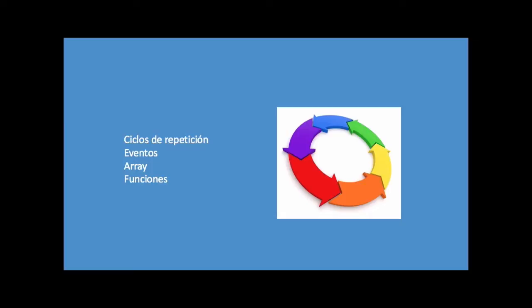Por ejemplo, si yo tengo una variable que se llama frutas, mediante un array yo puedo decirle que esa variable frutas tenga, por ejemplo, manzanas, peras o mangos.